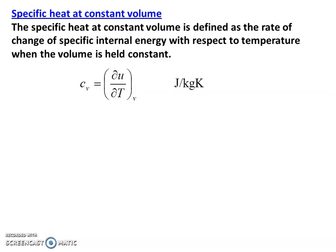First is specific heat. In the lecture on first law of Thermodynamics, internal energy: Q equal to W plus delta U. That is the continuation. Specific heat at constant volume is defined as the rate of change of specific internal energy with respect to temperature when the volume is held constant. The unit is joules per kilogram Kelvin.